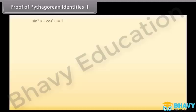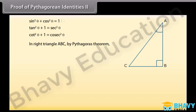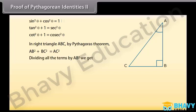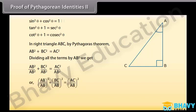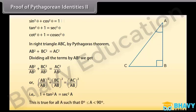Proof of Pythagorean identity 2. Similarly, in right triangle ABC, by the Pythagorean theorem, AB squared plus BC squared is equal to AC squared. Dividing all terms by AB squared, we can write it as (AB/AB)² + (BC/AB)² = (AC/AB)², that is 1 plus tan squared A is equal to sec squared A. This is true for all A such that 0° ≤ A < 90°.